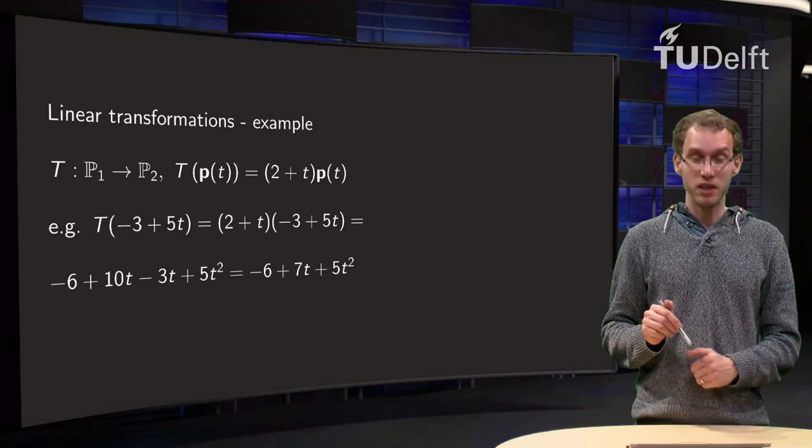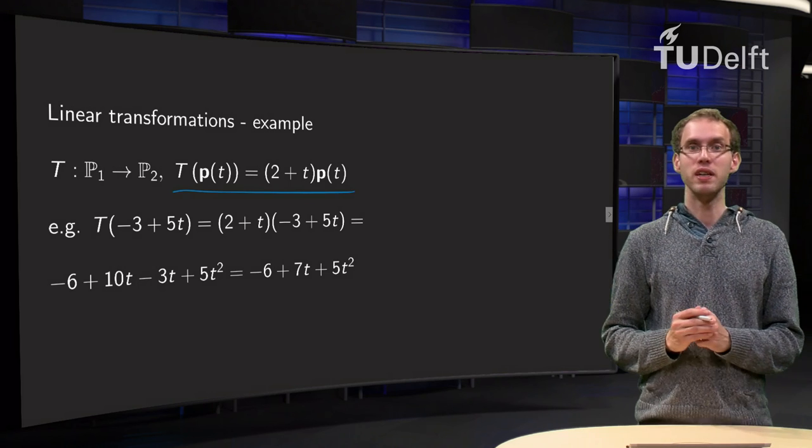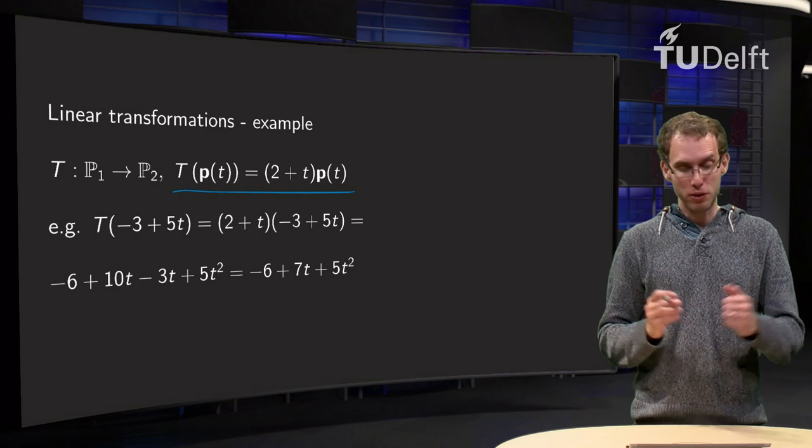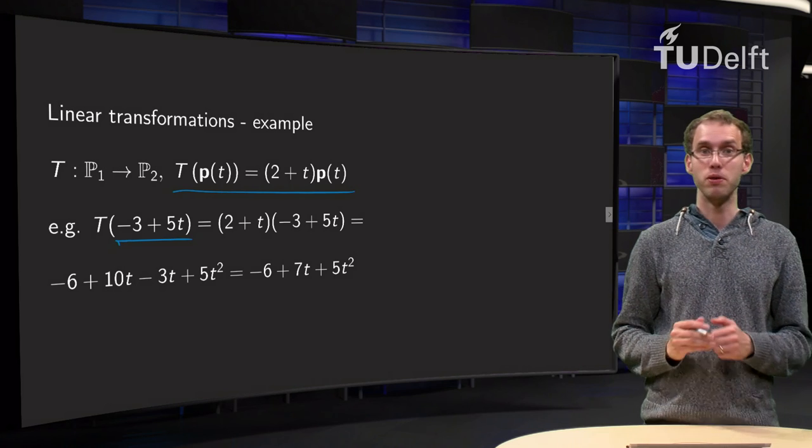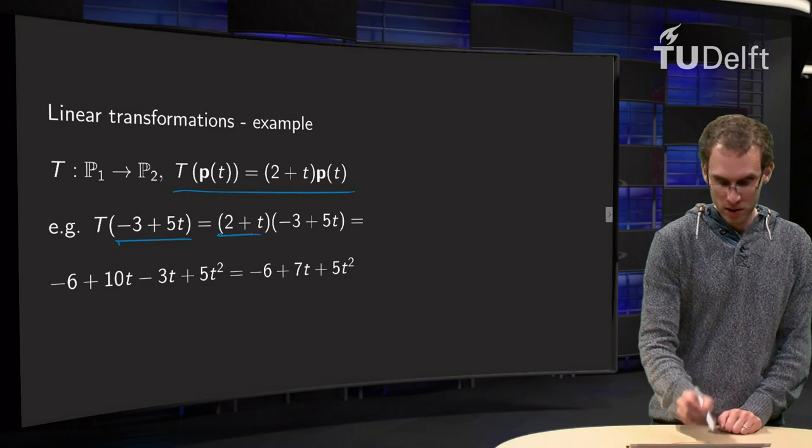Suppose we have our linear transformation going from P1 to P2 given by the image of p equals (2 + t) times the polynomial. So what happens for example to the polynomial from P1, minus 3 plus 5t, how do we get the image? Well, easy. You multiply by 2 plus t.